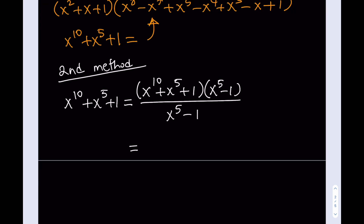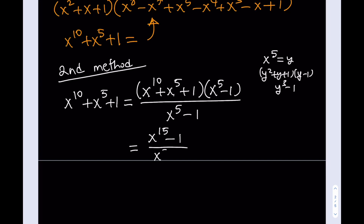If you let y equal x to the 5th, then x to the 5th squared is x to the 10th, so the expression becomes y squared plus y plus 1 multiplied by y minus 1, which equals y cubed minus 1. So this gives us x to the 15th minus 1, divided by x to the 5th minus 1. If you did polynomial division you'd get the original problem back, so instead we factor the numerator in a different way.